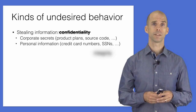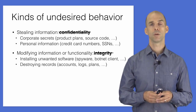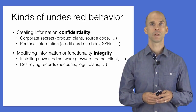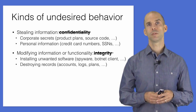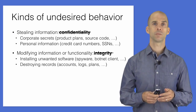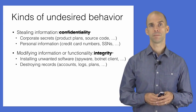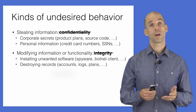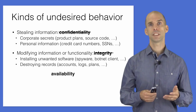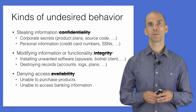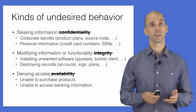The second property is integrity. If an attacker is able to modify or corrupt information kept by a system, or misuse the system's functionality, then he has violated the system's integrity. Example violations include the destruction of records, the modification of system logs, and the installation of unwanted software like spyware. The final property is availability. If an attacker denies service to legitimate users — for example, to purchase products or access bank funds — then the attacker has violated availability.